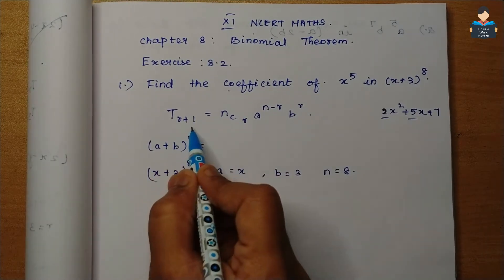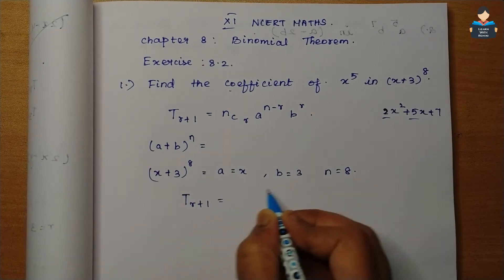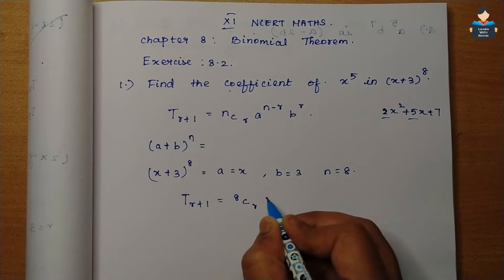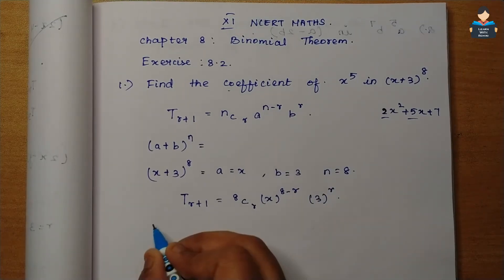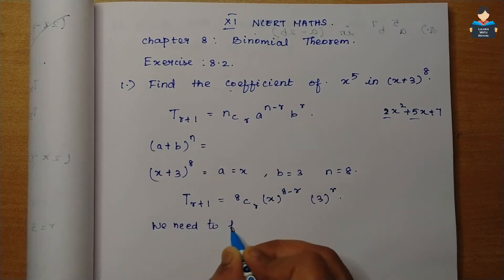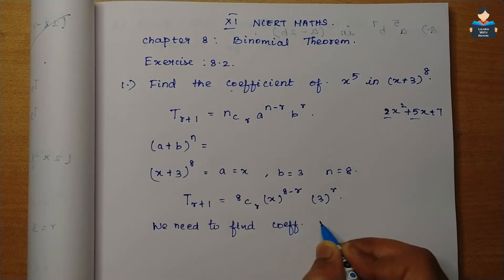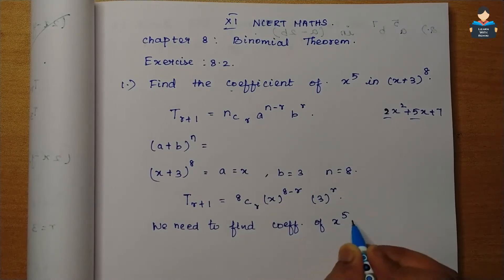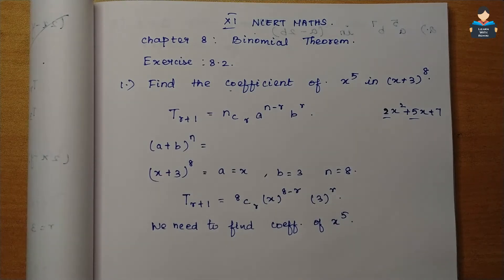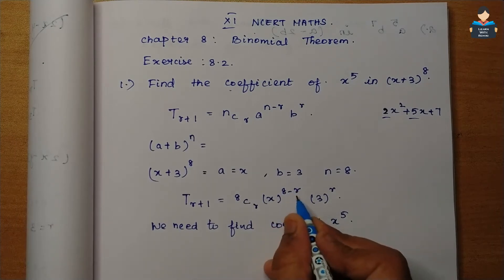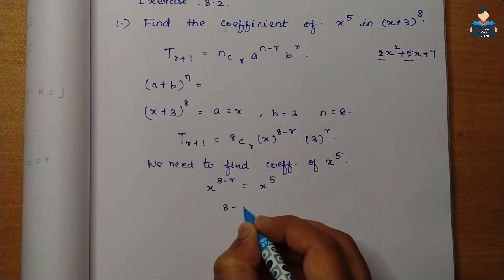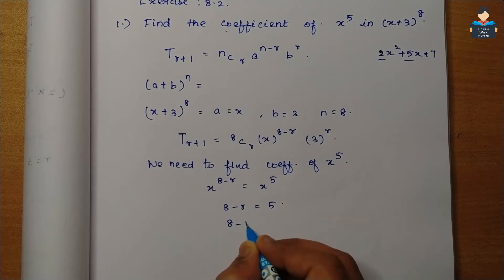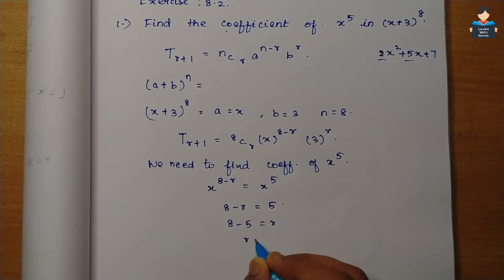Substituting into T(r+1): it equals 8Cr · x to the power (8−r) · 3 to the power r. We need to find the coefficient of x⁵. So we equate x to the power (8−r) with x to the power 5. Since the bases are the same, 8 minus r equals 5, giving r equals 3.